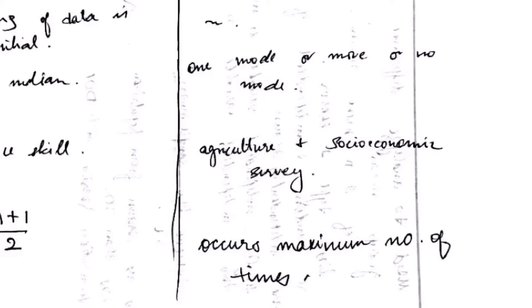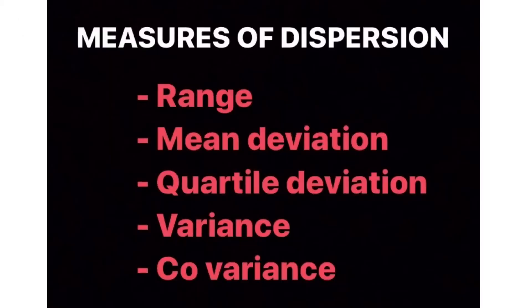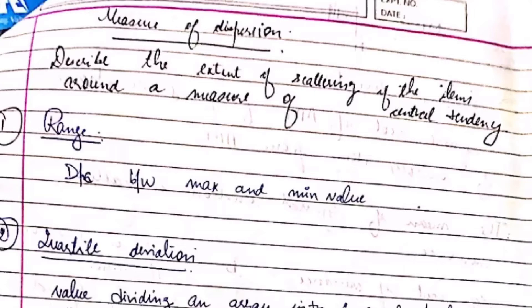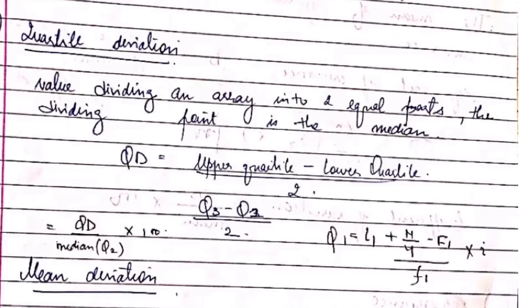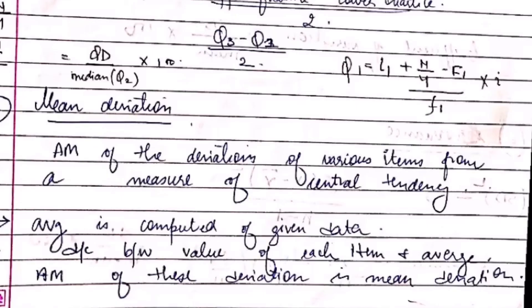Next is measure of dispersion, which can be measured by range, mean deviation, quartile deviation, variance, covariance, and combined mean. Range is basically the difference between the maximum and the minimum value. Quartile deviation is the value dividing an array into two equal parts; the dividing point is called the median, and the formula is upper quartile minus lower quartile divided by two. I have also mentioned the basic formulas for each term.